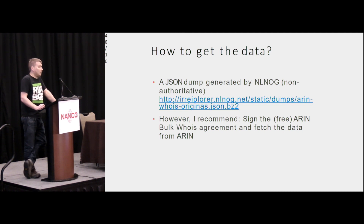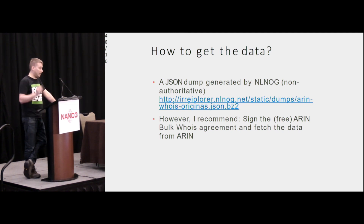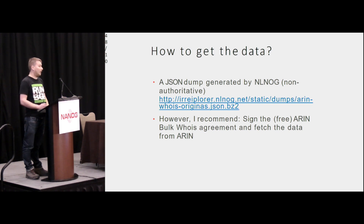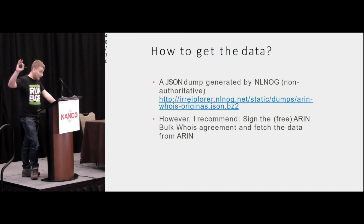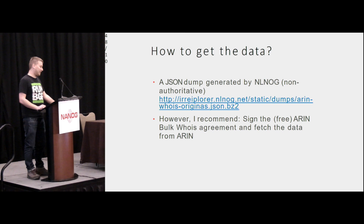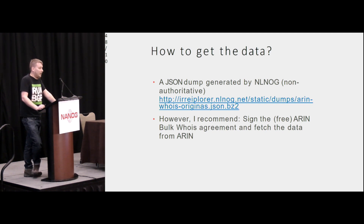There are currently two methods to obtain the data. You can use what I generate, but I won't claim that is an authoritative data dump — you just have to trust me. The recommended way is to sign the ARIN bulk WHOIS agreement, which is a fairly standard agreement saying don't use this for marketing or commercial products. You sign the agreement, you get an API key, you access the XML file, and then you can throw it through your own pipeline and plug it into your provisioning system. I'll stress again: just go directly to the source. But if you just want to toy around and see what might be available, the JSON dump I provide can be inspected.